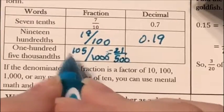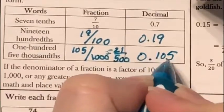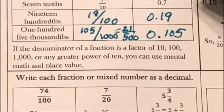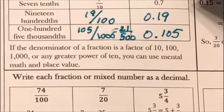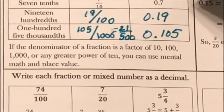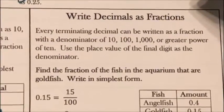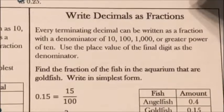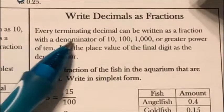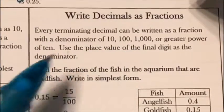I'm still going to use 105 over 1,000 to write the decimal, which gives me 0.105. If the denominator of a fraction is a factor of 10, 100, 1,000, or any greater power of 10, you can use mental math and place value. Every terminating decimal can also be written as a fraction with a denominator of 10, 100, 1,000, or a greater power of 10.